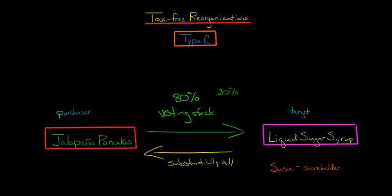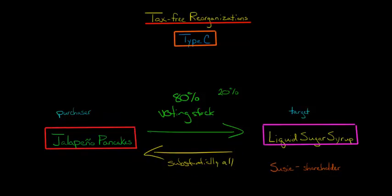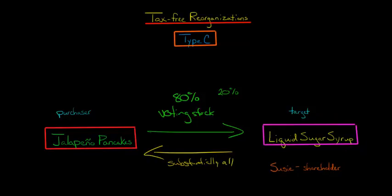This can be a bit of an issue because since Jalapeno Pancakes has to acquire substantially all of the assets of the target, if there are any unwanted assets that Liquid Sugar Syrup has, they can't go and sell them a month or so before the acquisition to try and get rid of them, because the IRS might collapse the whole deal into one single transaction. So basically you have to acquire almost all the assets.